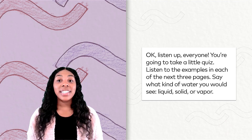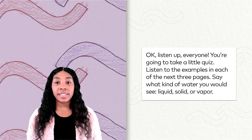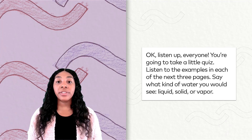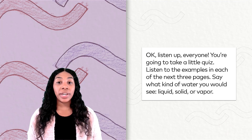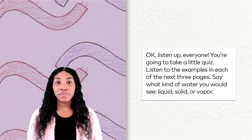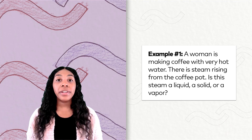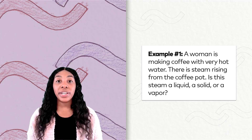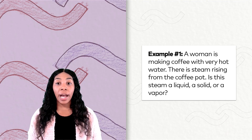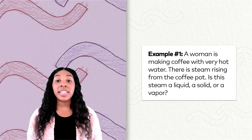Okay, listen up everyone. You're going to take a little quiz. Listen to the examples in each of the next three pages. Say what kind of water you would see — liquid, solid, or vapor. Example number one: A woman is making coffee with very hot water. There is steam rising from the coffee pot. Is this steam a liquid, a solid, or a vapor?